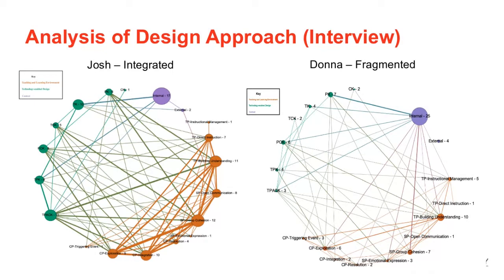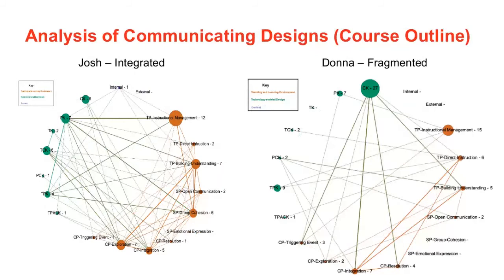So you start to see where their emphasis lies in their design, and you can also see that internal factors to the classroom and the people in it really do affect these decisions — they have strong connections and strong influences. When you look at the course profile — the first point of call for how students understand the design — you can see there are a lot fewer comments, and even Josh's connections are not as strong. Across the five cases, there was absolutely very little difference in how they communicated their designs through the course outlines, which suggests it's not a good tool for students to understand the design of the course.